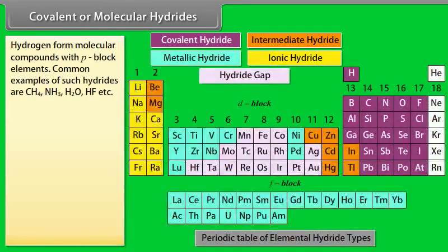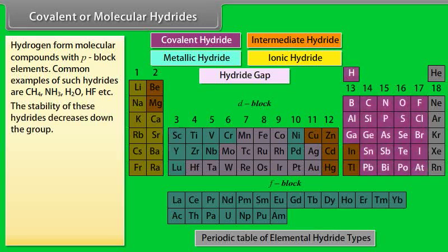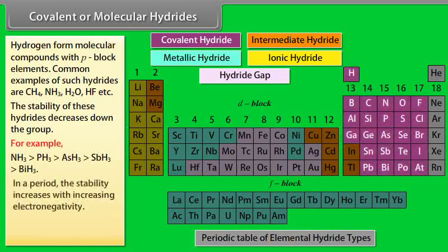Covalent or molecular hydrides: Hydrogen forms molecular compounds with p-block elements. Common examples of such hydrides are CH4, NH3, H2O, HF, etc. The stability of these hydrides decreases down the group. For example... In a period, the stability increases with increasing electronegativity.